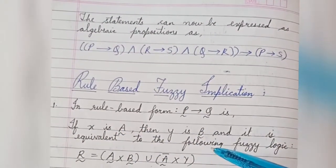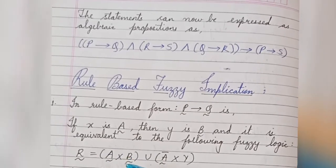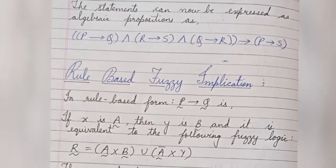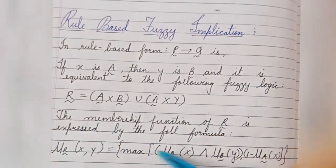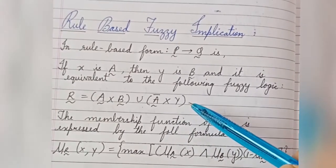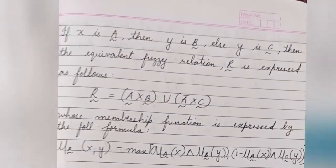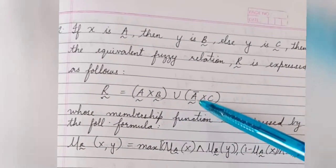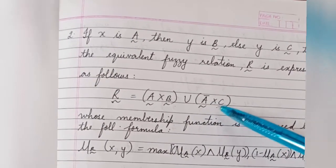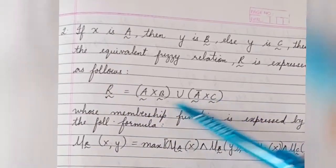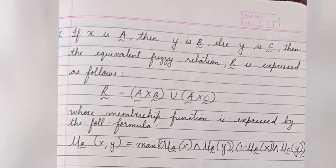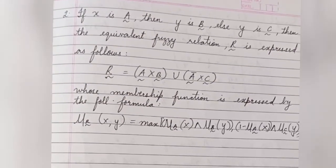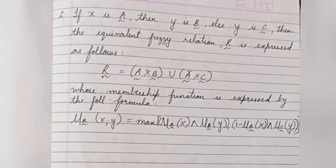The first rule is: R equals A Cartesian product B, union complement of A Cartesian product Y. The second rule is: R equals A Cartesian product B, union A complement Cartesian product C. Stay tuned for the upcoming video, which will be based on the two rules of fuzzy implication.